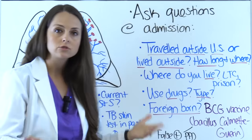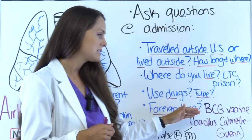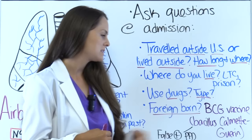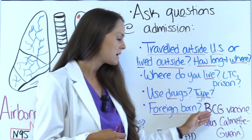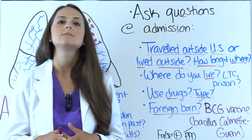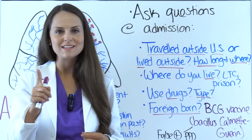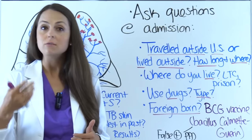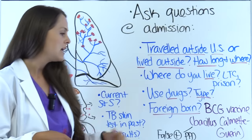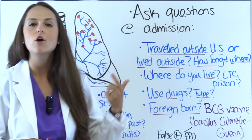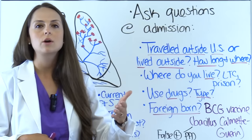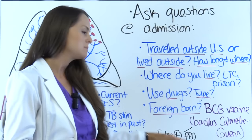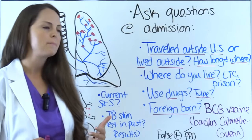Ask patients whether they were born in the US or another country, because some countries administer the BCG vaccine — the bacillus-calmette-guérin vaccine — to prevent tuberculosis. An important point to remember: if a patient received the BCG vaccine as a child and you give them a PPD tuberculin skin test, they will have a false positive. For those patients, a blood test and chest x-ray are better options to rule out active disease.